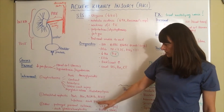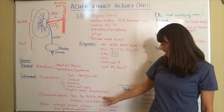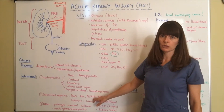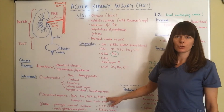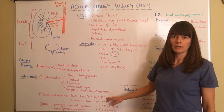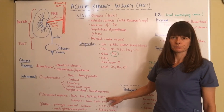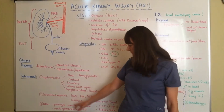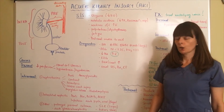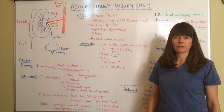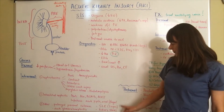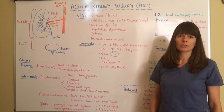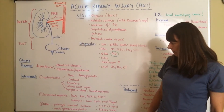The second intrarenal cause is interstitial nephritis, caused by medications such as other types of antibiotics. NSAIDs can be nephrotoxic, as can ACE inhibitors, which work on the RAS system and specifically on the kidney. Infections can also cause acute kidney injury, including acute pyelonephritis, a kidney infection, and viral or fungal infections such as glomerulonephritis, which will be discussed in more detail in a separate video.